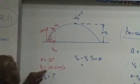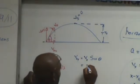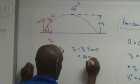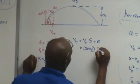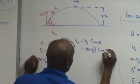What is V0? Times? Sine of? 37. 37 degrees.